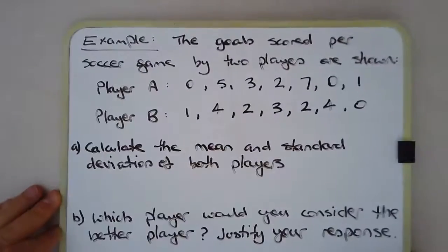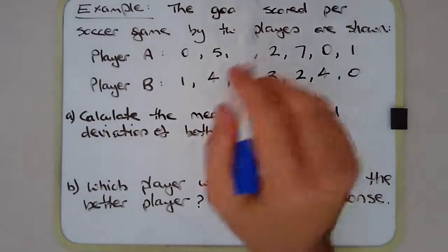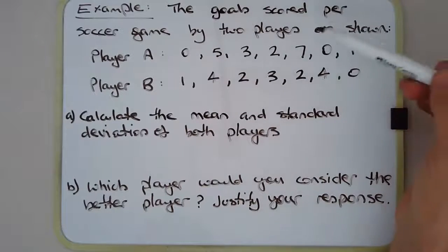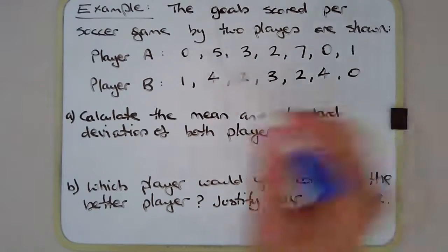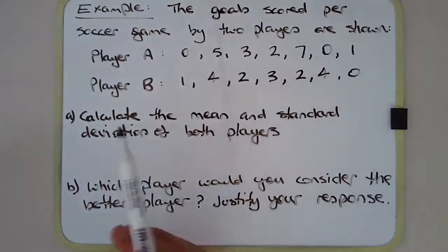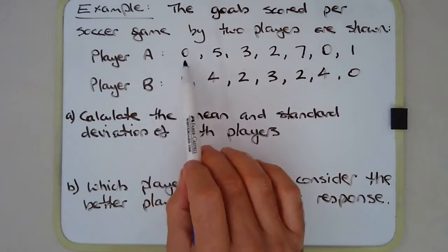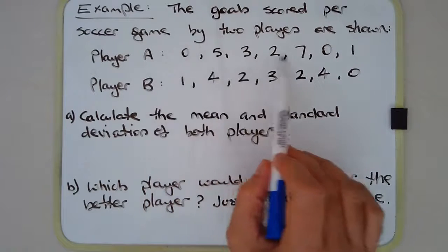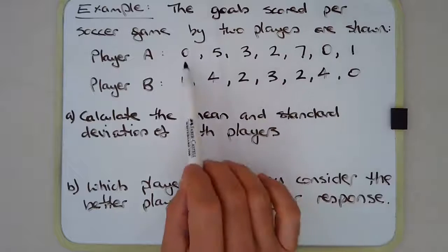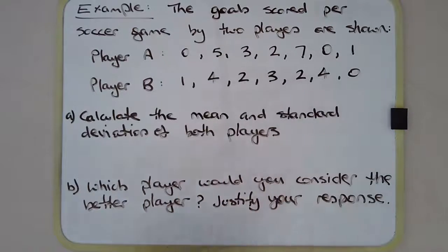Let's have a look at an example. In this example we're comparing the performance of two players. The goals scored per soccer game by two players are shown: Player A: 0, 5, 3, 2, 7, 0, 1; Player B: 1, 4, 2, 3, 2, 4, 0. Part A is to calculate the mean and standard deviation of both players.